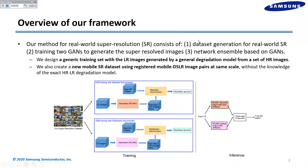In this paper, we propose an effective real-world SR solution consisting of three steps: data-side generation, GANs training, and network assembly based on two GANs.